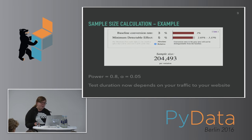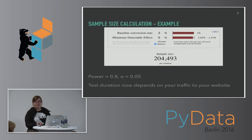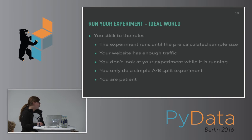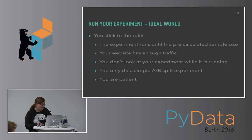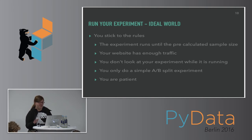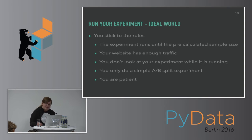The smaller your minimum detectable effect, the more samples you need to collect per variant. The larger the true difference between your two versions, the fewer samples you need to confirm it. In an ideal world, you would stick to the rules: the experiment runs exactly as long as needed according to your pre-calculated sample size, your website has enough traffic, you don't look at your experiment while it's running, and you only test two versions against each other. You're patient and nobody asks for preliminary results while the experiment is still running. If you run exactly like this, you won't have any problems with hypothesis-based testing.